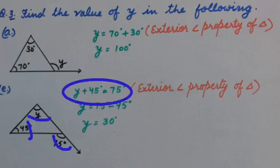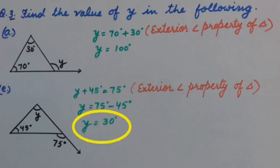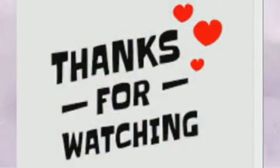Similarly, E part. 45 degrees plus Y equals 75 degrees. As per exterior angle property of triangle, transposing 45 degrees, we get Y equals 75 degrees minus 45 degrees, that is 30 degrees. Thanks for watching.